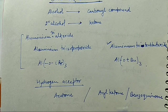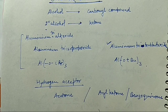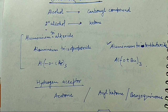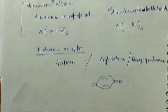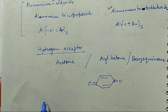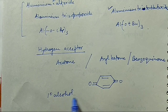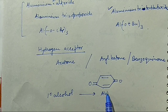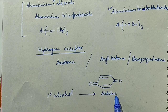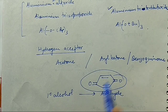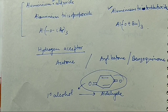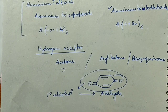When we have to convert primary alcohol into aldehyde, we can do so through this reaction, but for that we need a better hydrogen acceptor. The structure of benzoquinone is a cyclic diketone (para-benzoquinone). Acetone will not work for converting primary alcohol to aldehyde.